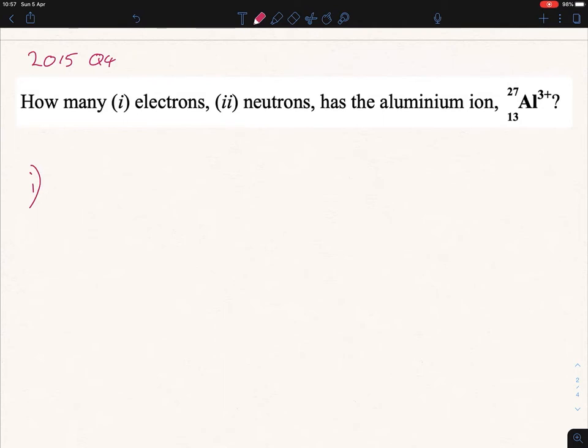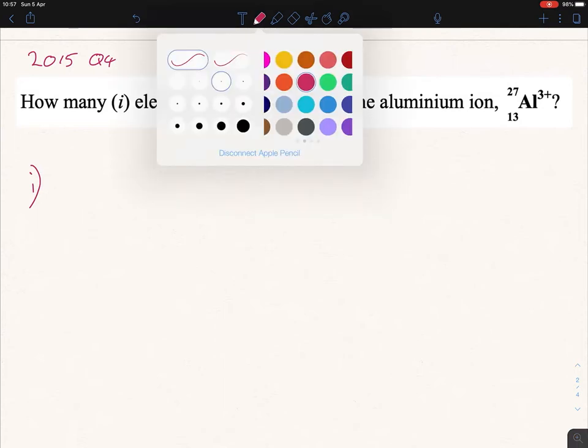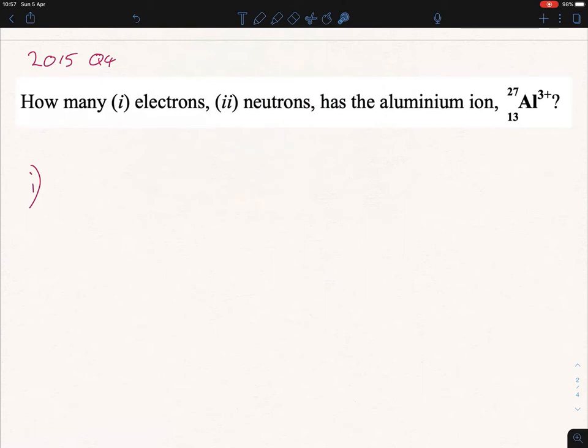The number of electrons and the number of protons would be the same if it was a neutral atom. It's not a neutral atom, it's 3 plus, so that means it has lost 3 electrons because electrons are negative. So 13 here represents the atomic number, and how do I know it's atomic number and not the mass number? Well, the mass number is always the bigger number, doesn't matter whether it's on top or on the bottom, the smaller number would be the atomic number. And the atomic number is the number of protons in the nucleus of an atom.